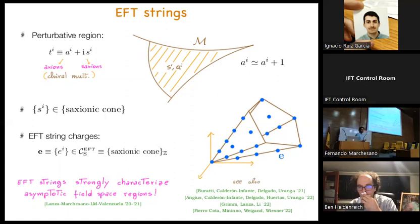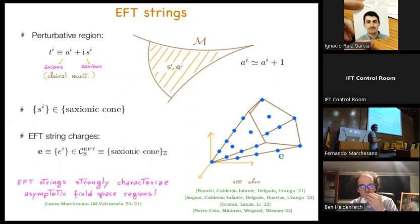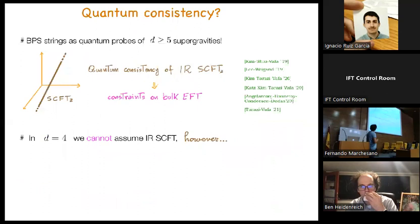We explored this connection between EFT strings and asymptotic field space regions, particularly in relation with the weak gravity conjecture and the swampland distance conjecture in our paper. There are also some related ideas presented from complementary viewpoints in other papers. In this talk, I would like instead to focus on what the quantum consistency of these EFT strings can tell us about the bulk sector.